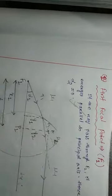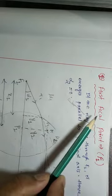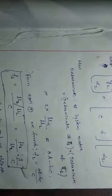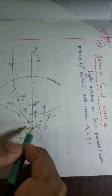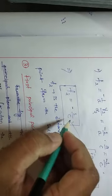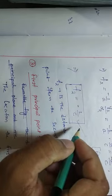Good morning. In our last class we discussed the first focal point, or the location of F1. We found that the location of F1 is μ1/μL × 1/C. We also discussed the second focal point F2, and its coordinate or location was found to be −1/C, while the related term was 1/C.